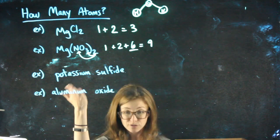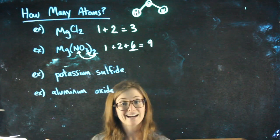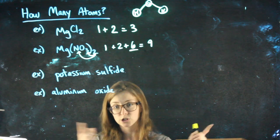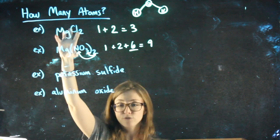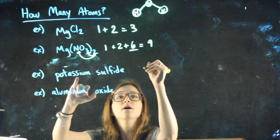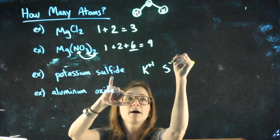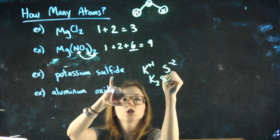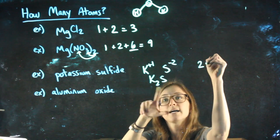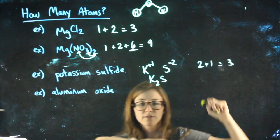Potassium sulfide. Just from the name here I can't actually tell. I need to look at the charges, crisscross, come up with the formula, and then I can do it. So potassium is a plus one, sulfur is a minus two, K2S, two potassiums, one sulfur, three atoms.